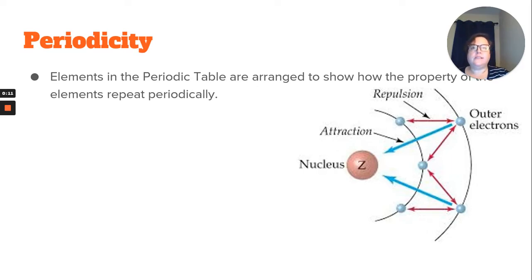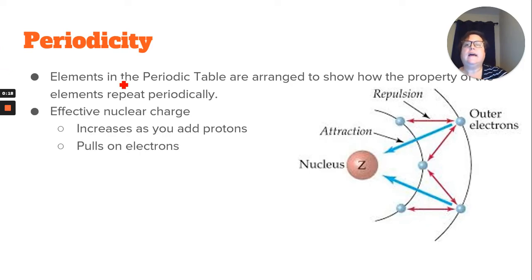There are two main reasons for the trends that we see, and it depends on if the elements are in the same group or the same period. Effective nuclear charge, and hopefully you remember that nuclear charge is simply the number of protons, is how we explain things when the elements are in the same period or row.